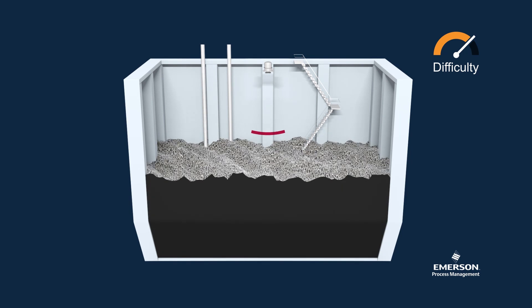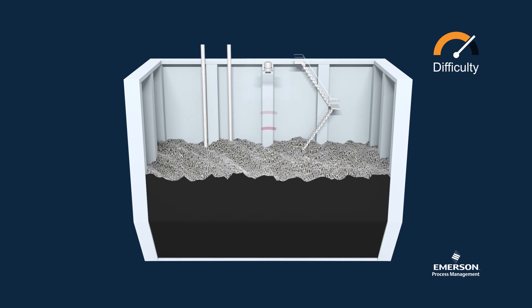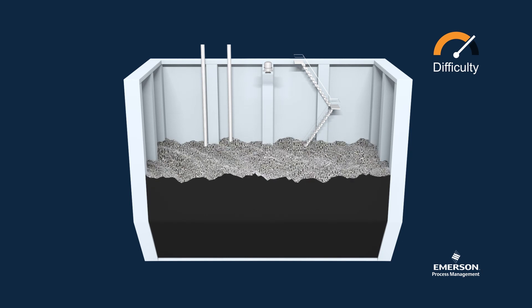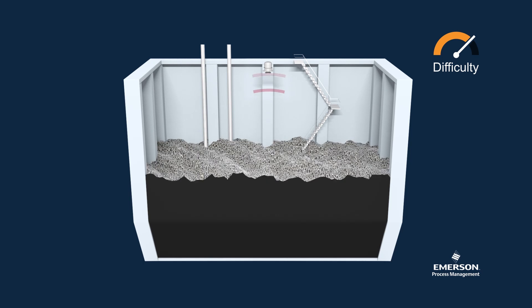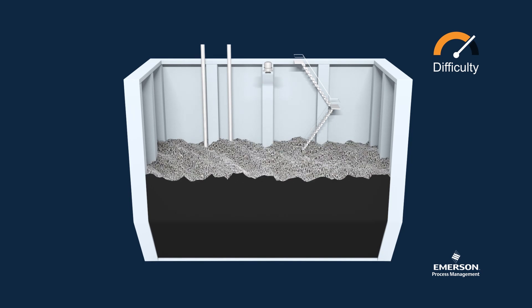Marine tanks can have a layer of foam on top or turbulence. This depends on cargo and operating conditions. This layer can conflict with the liquid surface, making it harder to detect the true liquid surface.